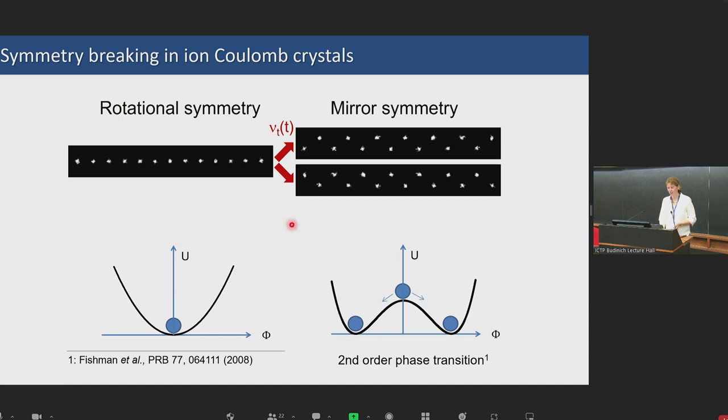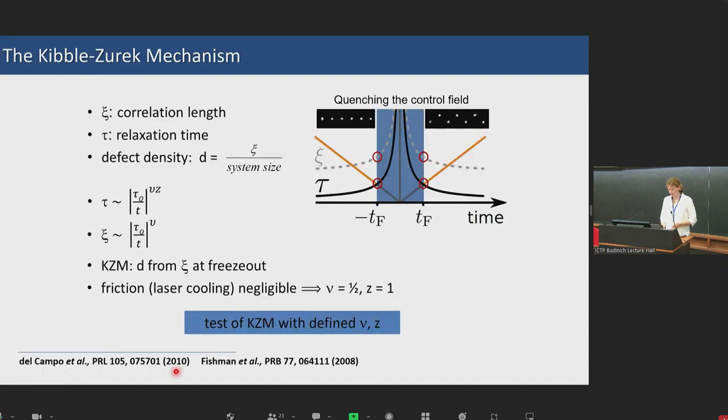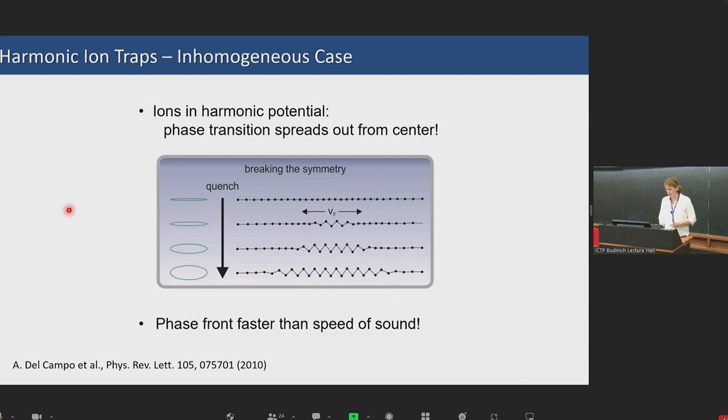That's why it was proposed in 2008 by Fishman and Moric. They were looking at this phase transition from linear to zigzag where you break the rotational symmetry of such a potential landscape and you go to a mirror symmetry with a double well. They calculated that in the thermodynamic limit and found that this is a second-order phase transition for really large Coulomb crystals. The idea came up, what happens if you undergo this phase transition in a very fast, non-adiabatic way? Is it possible to form defects? That was proposed by Adolfo Del Campo in 2010 to use the system as a test for Kibble-Zurek dynamics.